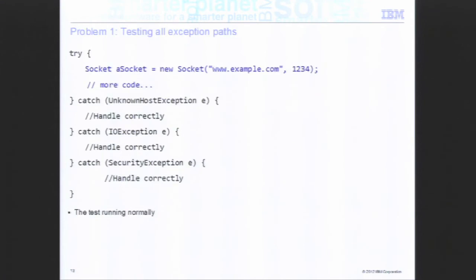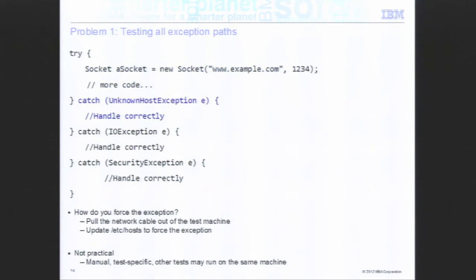Let's go through this example. In the first case, the test runs normally — it creates the socket, no problems, it's connected to example.com and you can do whatever you want with that socket. For the UnknownHostException path, how else could you test for it? You could pull the network cable out of the machine and run your test, or you could modify /etc/hosts to ensure it doesn't return what you were expecting — but it's not particularly practical.